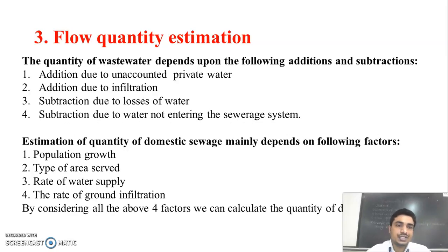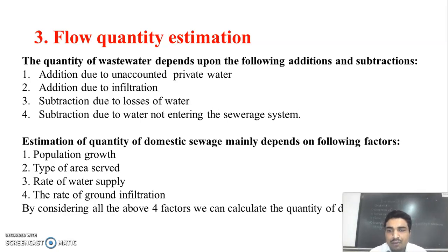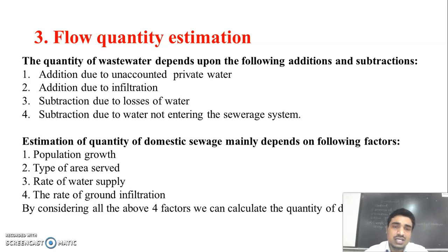The next part is the flow quantity estimation. This is very important. Whenever we design the sewer line or sanitary sewage system, we should know how much quantity of flow is to be generated. Otherwise, if we design randomly, the sewer may be inadequate or oversized. To achieve economy and save cost, proper estimation of how much quantity of wastewater is to be generated is very, very important, and we should design the sewer system accordingly.